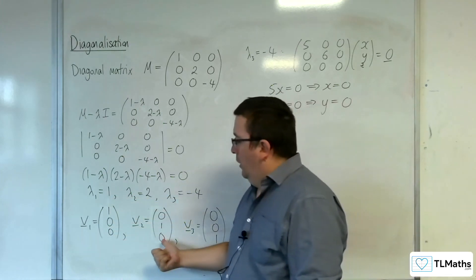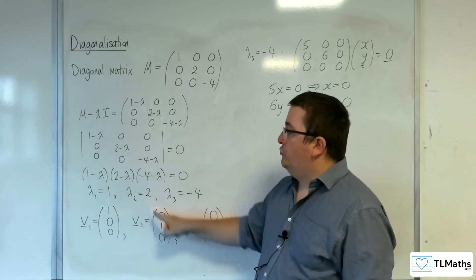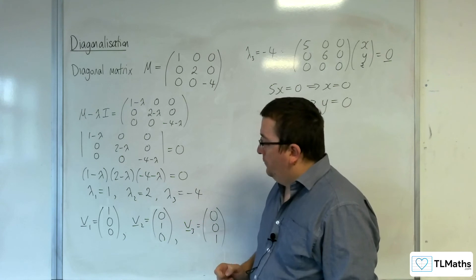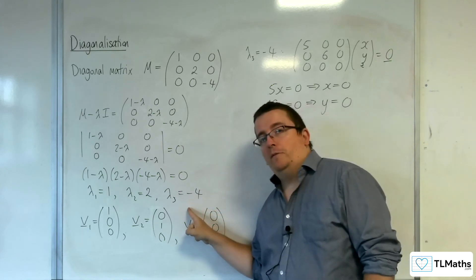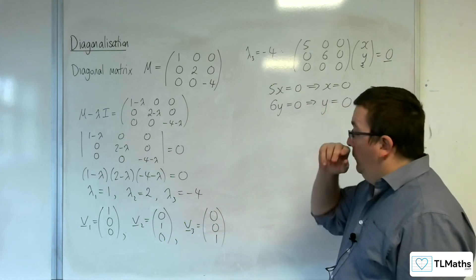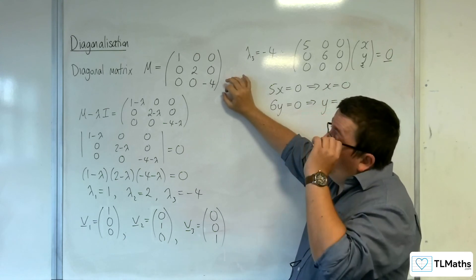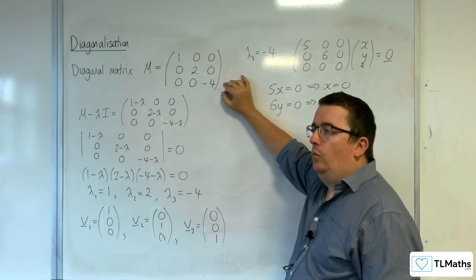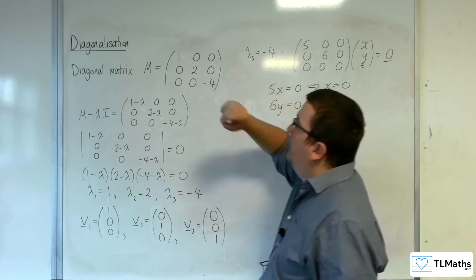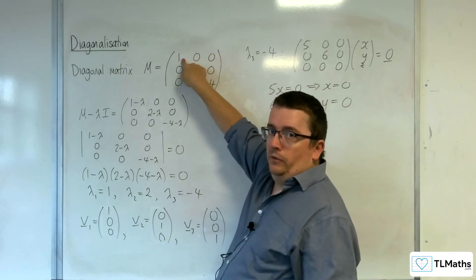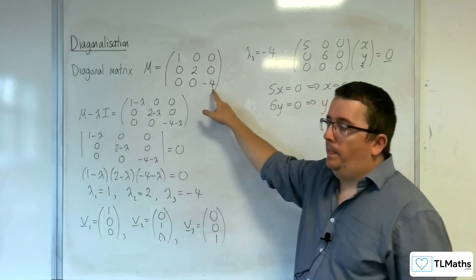We've got an invariant line along the y-axis, and all the points are being multiplied by 2, so we've got a stretch along the y-axis. Finally, for the z-axis, all those coordinates on the z-axis are being multiplied by minus 4. That is what is underlying this diagonal matrix, and we've seen what transformations 3×3 matrices work with.